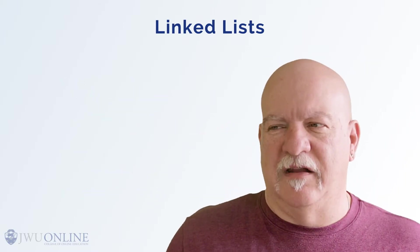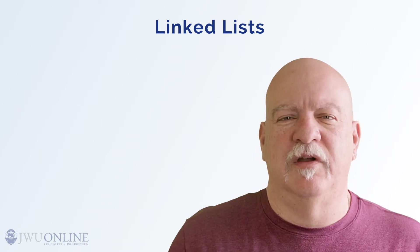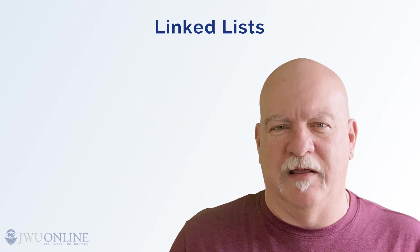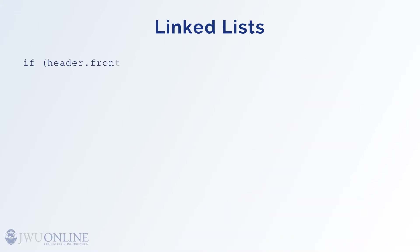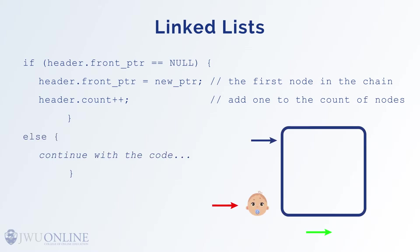Once we do this, and say we wanted to create another memory baby in the future and put it in the chain, the first thing we have to do is check if the header is currently empty — meaning it points to null — or is it already pointing to a node. To check that, we write: if (header.front_pointer == NULL), then assign the new pointer to that location: header.front_pointer = new_pointer; This is now the first node in the chain, and then we increment header.count to indicate we have another node — in this case it would be one.